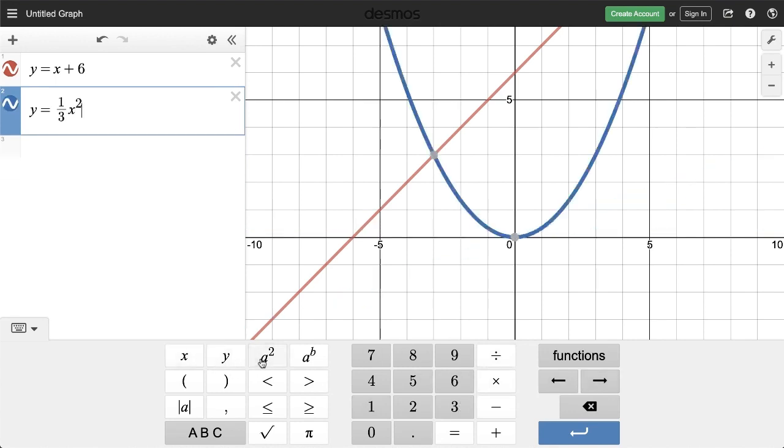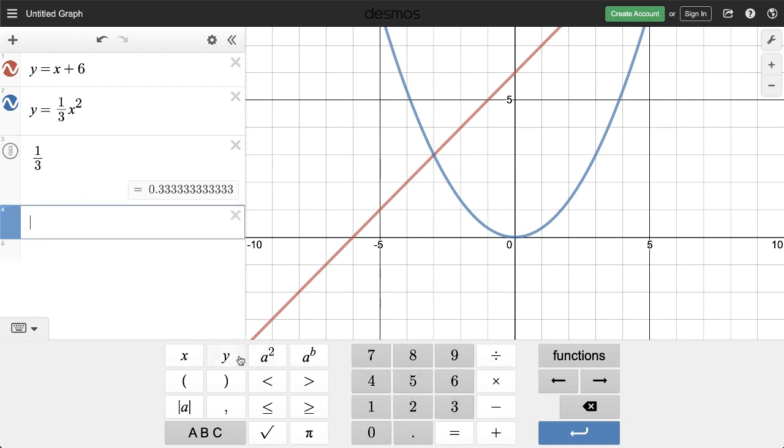Let's call out two specific things here. First, to enter a fraction, I press the division symbol here on the keypad, though you can also press the forward slash key on a physical keyboard. It's located between period and shift. Next, there are several ways to enter exponents. If you just need to square something, press the a squared button.